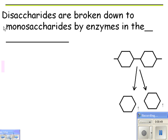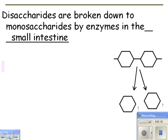The next thing is to break down disaccharides. Polysaccharides are broken down into disaccharides — two sugars bonded together. If you break that bond, you get monosaccharides. So disaccharides are broken down to monosaccharides by enzymes in the small intestine.